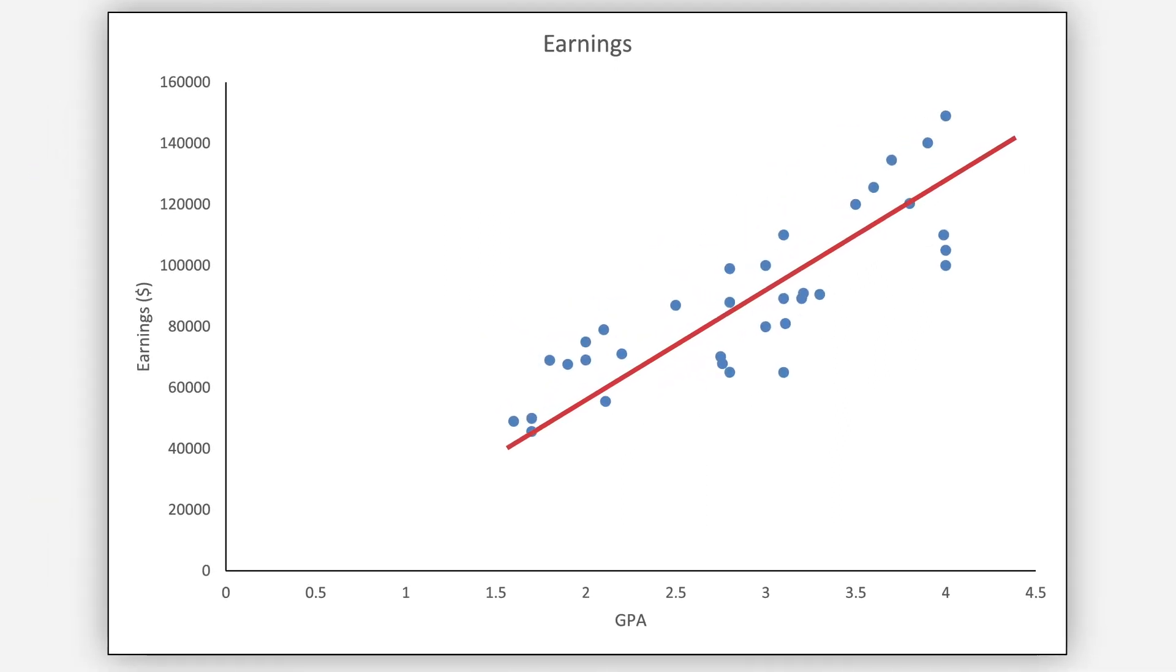Let's look at this graph closely. Here, we can predict that someone with GPA of 2.5 would earn around $74,454 and someone with GPA of 3.5 would earn $109,626.